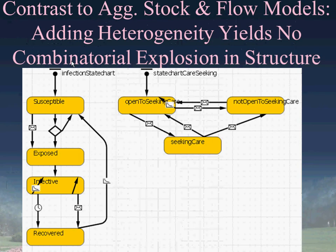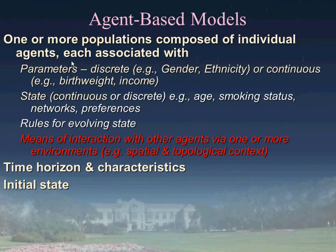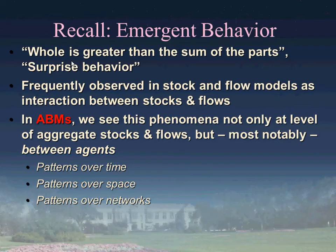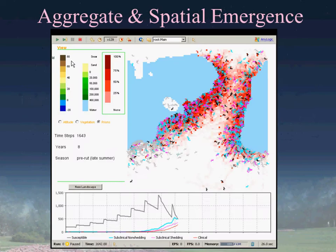We can have other agents—for example, networks in which we organize individuals—and then we can see patterns that result over time. We see emergence not only occurring over time but also over space.